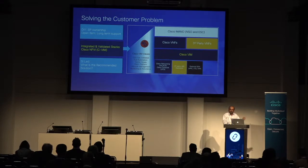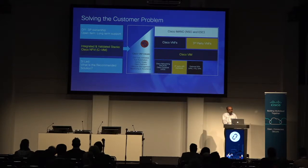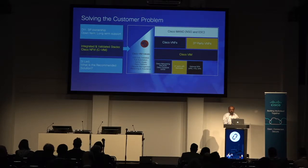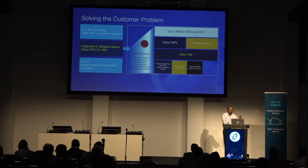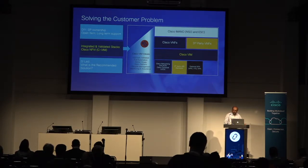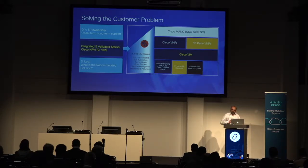Without automation, every site ends up with slight variations — like a snowflake. So these two problem statements drove the architecture of CVIM: a fully automated platform with one-click, one-button, one-CLI approach with a REST API front end, which not only handles day-zero cloud installation but also lifecycle manages it across releases, software updates, and security updates.